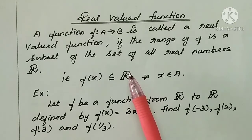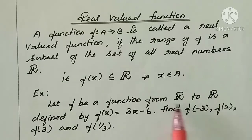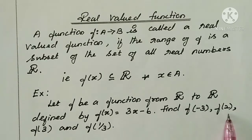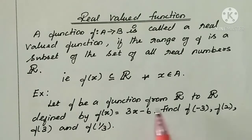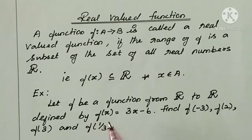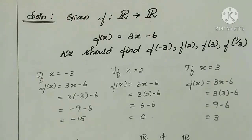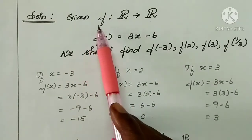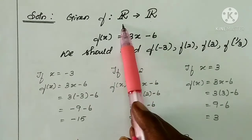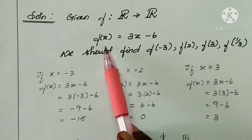Here is an example. Let f be a function from R to R, defined by f of x equal to 3x minus 6. Find f of minus 3, f of 2, f of 3, and f of 1 by 3. F of x is one function. Domain and co-domain: R is the set of all real numbers. We will substitute each value for x: minus 3, 2, 3, and 1 by 3.